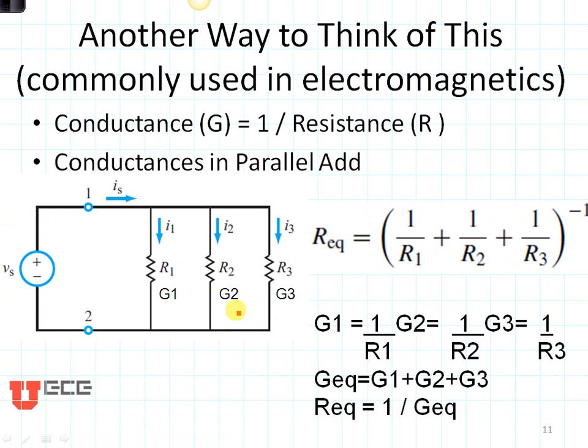There's another way to think of that, and that's in terms of conductance. Conductance is one divided by the resistance. So here is the conductance, one divided by R1, that you can see right here. Adding up the resistors in parallel is the same thing as adding the conductance in parallel, except it's very simple. The conductance is in parallel at G equivalent is equal to G1 plus G2 plus G3. Remember that R equivalent is one divided by G equivalent. So this is often used in electromagnetics as well as other aspects of electrical engineering.